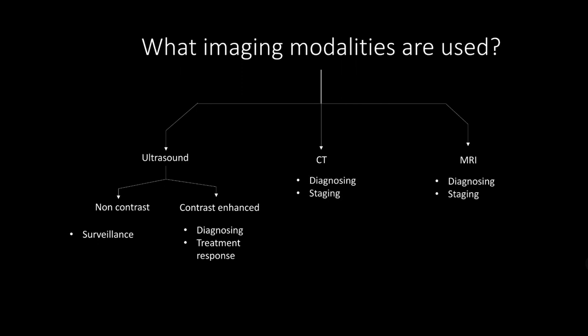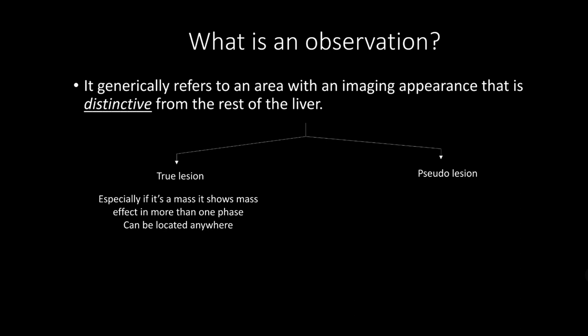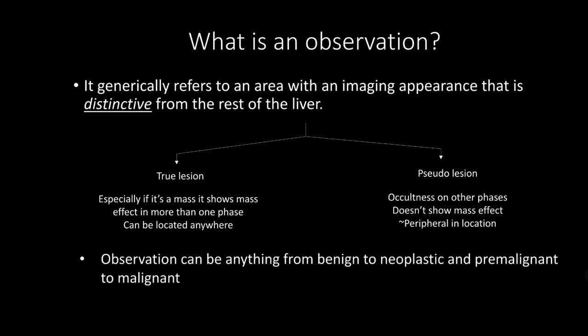An observation generally refers to an area within imaging that has an appearance distinctive from the rest of the liver. This distinctive area can be a true lesion or a pseudo-lesion. A true lesion, especially if it is a mass, shows mass effect apparent in more than one phase and can be located anywhere. A pseudo-lesion usually shows peripheral predilection, is occult on other phases, and doesn't show mass effect. While hepatocellular carcinoma is the most common primary hepatic malignancy in the LIRADS targeted population, other primary malignancies like intrahepatic cholangiocarcinoma or combined HCC with intrahepatic cholangiocarcinoma can also occur. Observations can range from benign to neoplastic, and pre-malignant to malignant.